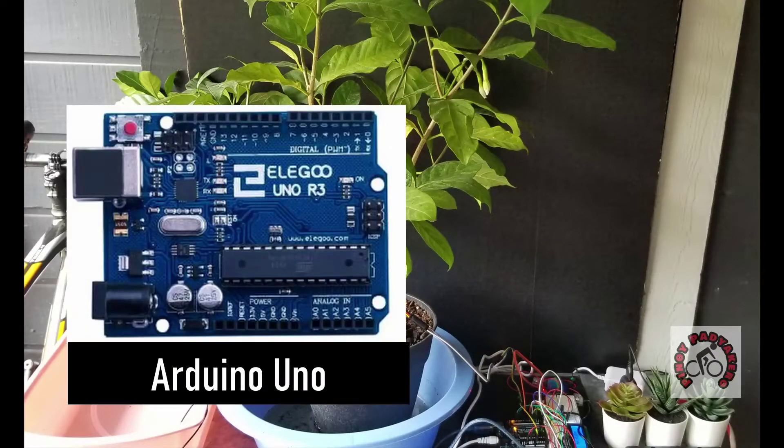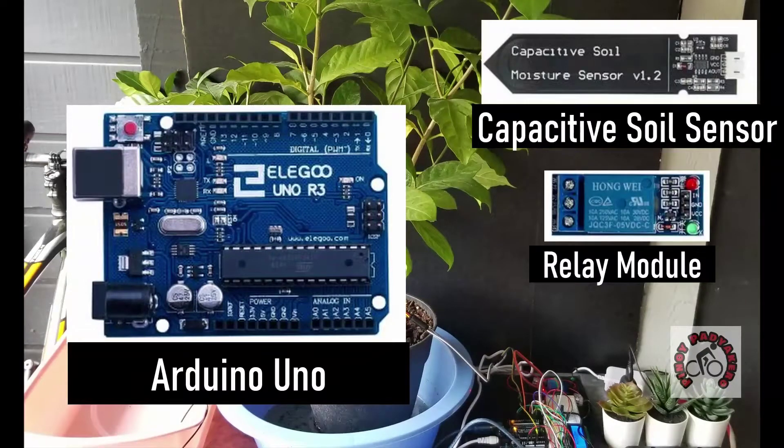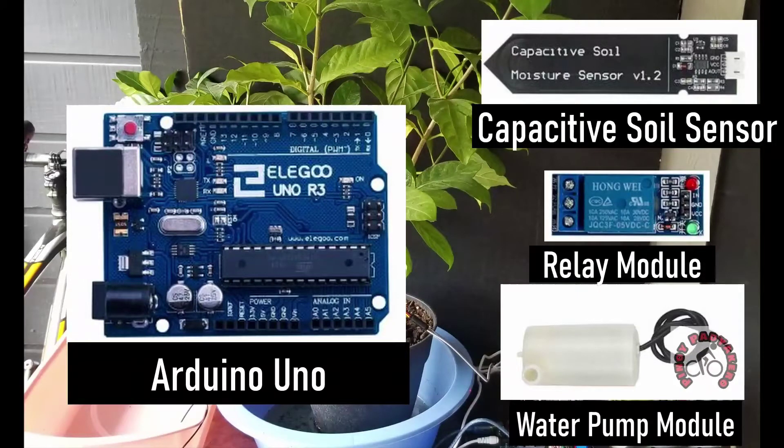You will need an Arduino Uno, a capacitive soil moisture sensor, a relay module, and a water pump.